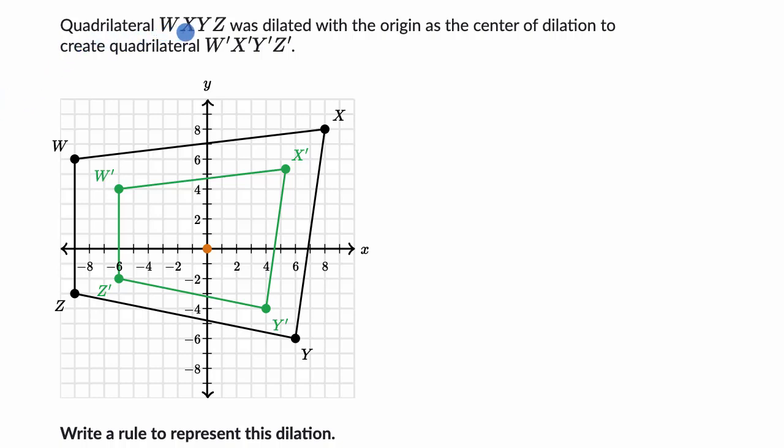We are told quadrilateral WXYZ was dilated with the origin as the center of dilation to create quadrilateral W prime, X prime, Y prime, Z prime. So we started off with this black quadrilateral and then it looks like it was dilated down. One way to think about it, centered at the origin, it was scaled down. Write a rule to represent this dilation.